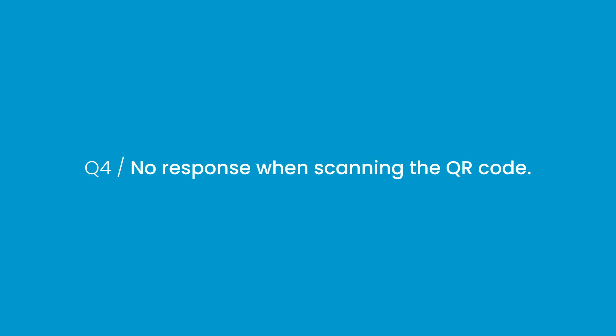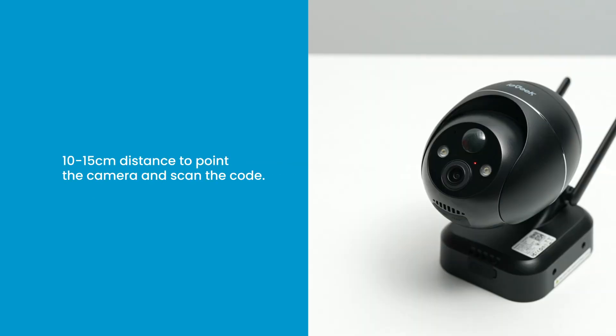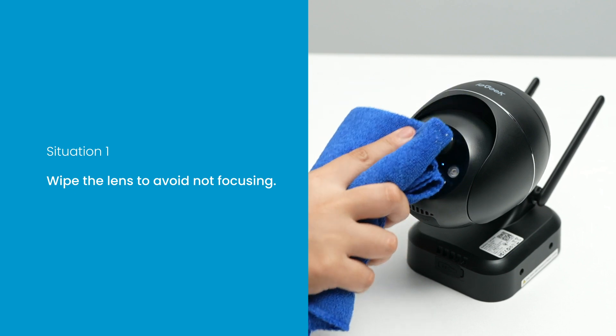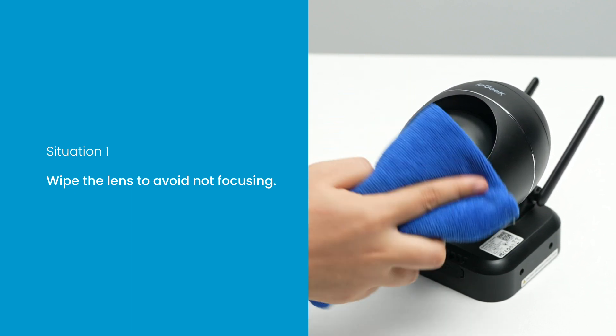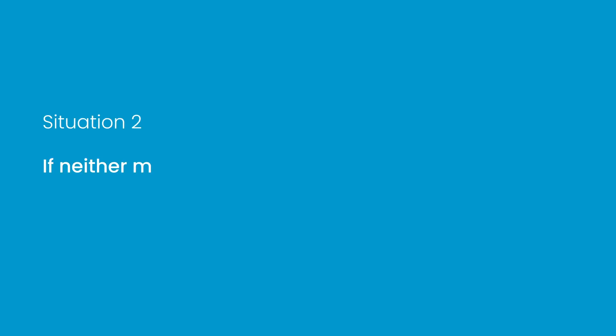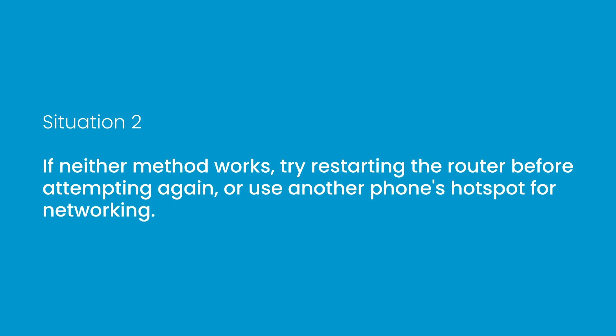Question 4: No response when scanning the QR code. Hold the QR code on the phone 10–15 cm away from the camera lens and try scanning from different angles. Situation 1: Ensure that the lens is clean, and try using AP networking to check for focus after the device is connected to the network. Situation 2: If neither method works, try restarting the router before attempting again, or use another phone's hotspot for networking.